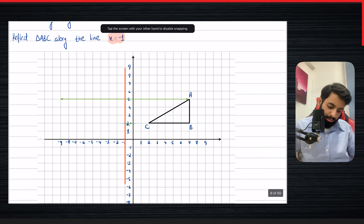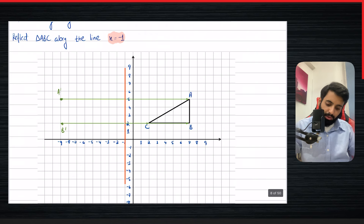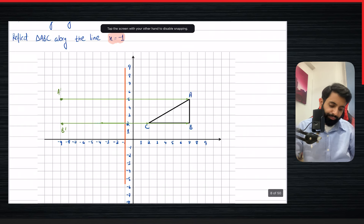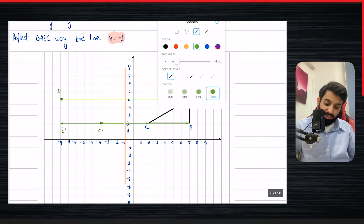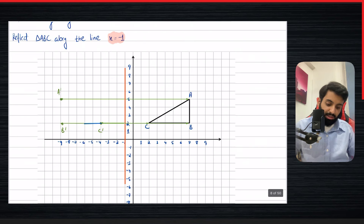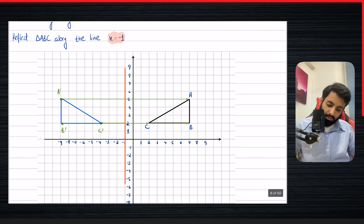For point B, just to be on the safe side, counting: one, two, three, four, five, six, seven, eight — same distance as A, so B prime is directly below A prime. Then point C is three units to the right of the line, so once reflected it's three units to the left — that's where C prime is. Now join these three points with straight lines and we have our image.